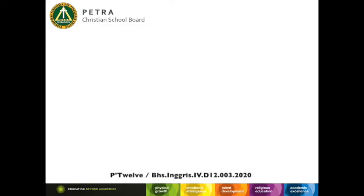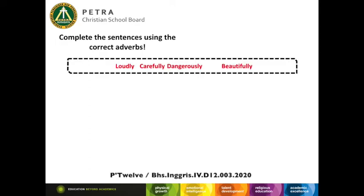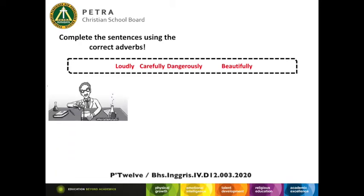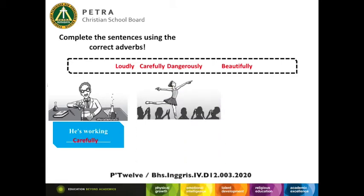Let's practice now. I want you to complete the sentences using the correct adverbs — the answers are in the box. Picture number one: he's working ___. You need to choose the answer from the box. How did the professor do his research? Yes, he's working carefully.